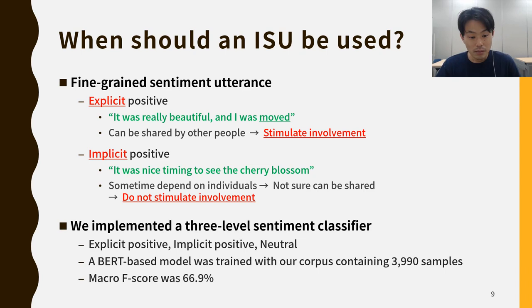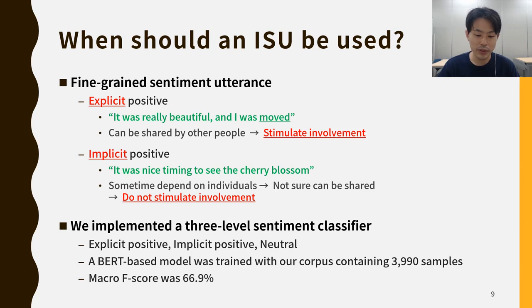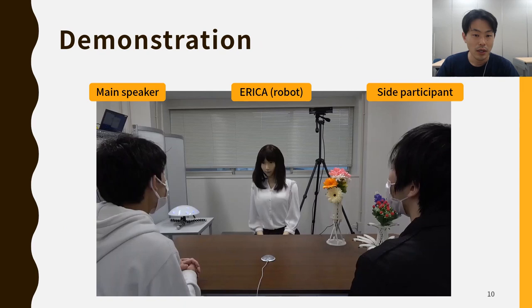We extend the sentiment analysis to a three-level sentiment classifier that classifies user utterances into explicit positive, implicit positive, or neutral. Note that we don't consider negative sentiment in this case, because most sentiments are positive in the attentive listening scenario, which is different from counseling. We annotated the three-level sentiment labels in our attentive listening dialogue corpus, then trained a BERT-based model. The classification score was 66.9% macro-F score. Using this classifier, we implemented the multi-party attentive listening system with Involvement Stimulating Utterances.